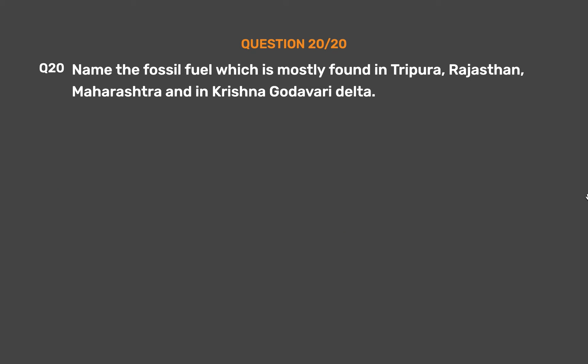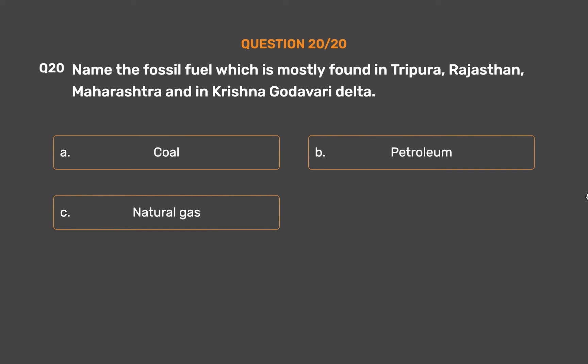Question number 20: Name the fossil fuel which is mostly found in Tripura, Rajasthan, Maharashtra, and in the Krishna Godavari Delta. Option A: Coal. Option B: Petroleum. Option C: Natural gas. Option D: None of these.